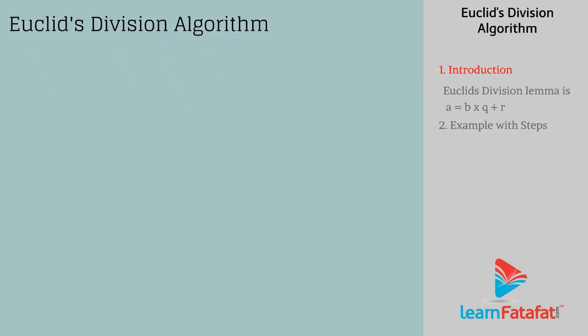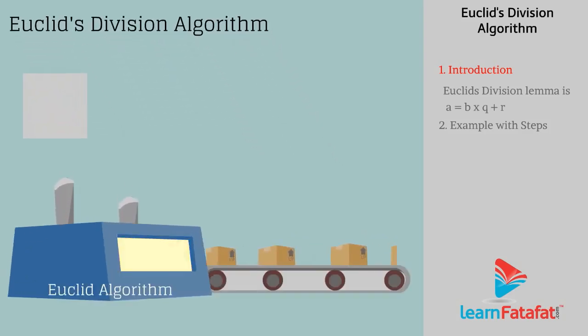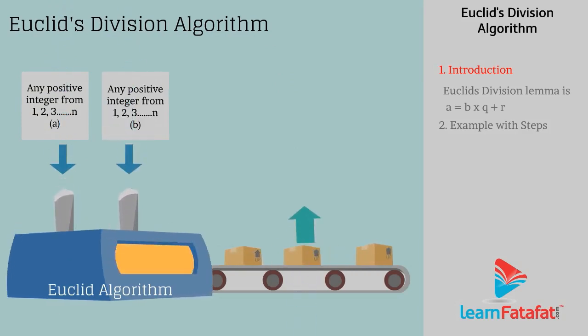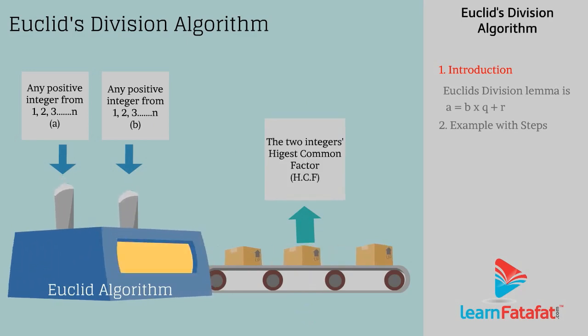Euclid Division Algorithm. It is the algorithm used to calculate the highest common factor, HCF, of two positive integers, A and B.